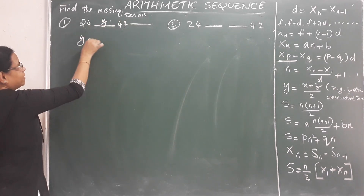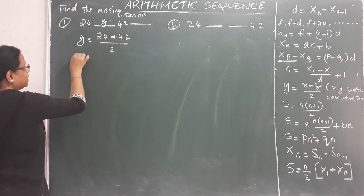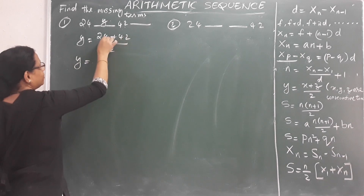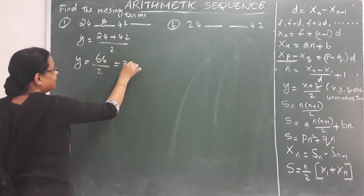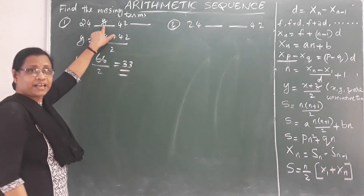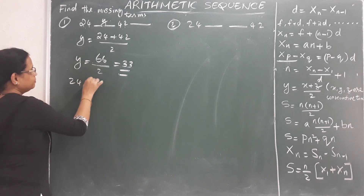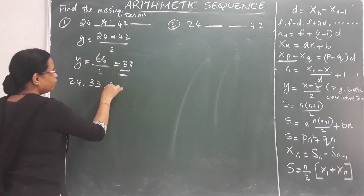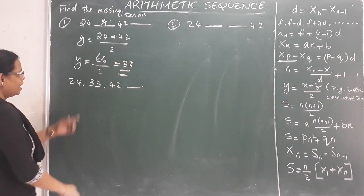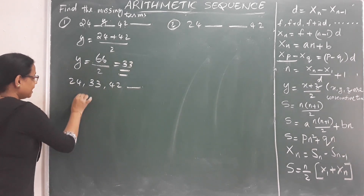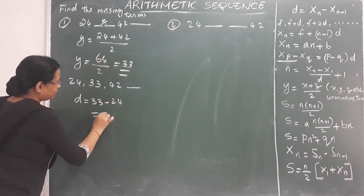So the missing middle term y equals (24 plus 42) divided by 2, that is 66 divided by 2, which equals 33. So 33 is the second term. The common difference D equals 33 minus 24, which equals 9.